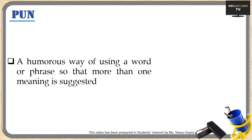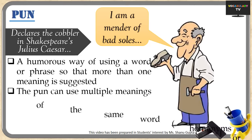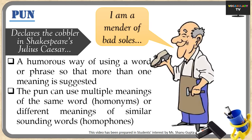The last figure of speech covered in Part 1 is pun. A pun is a play on words — a humorous way of using a word or phrase so that more than one meaning is suggested. An example from Shakespeare's Julius Caesar: a cobbler, asked what his trade is, replies he is 'a mender of bad soles.' Mend means to correct, and a cobbler mends the soles of worn-out shoes, but 'soles' can also be taken to mean souls — implying he corrects people who have bad souls. Most puns use multiple meanings of the same word (homonyms) or different meanings of similar-sounding words (homophones), as with sole and soul.